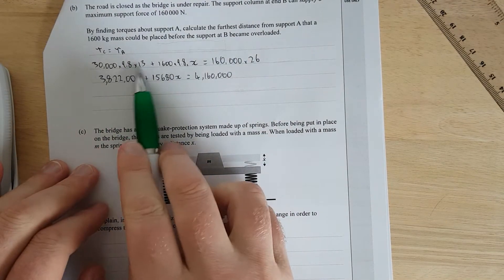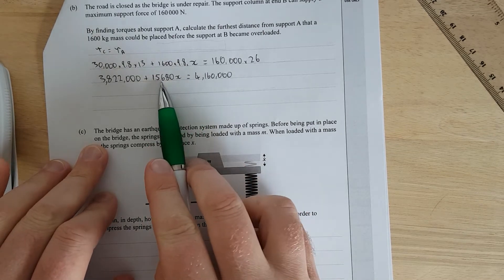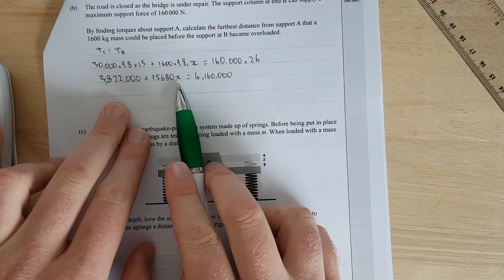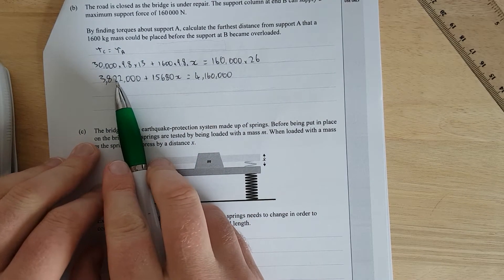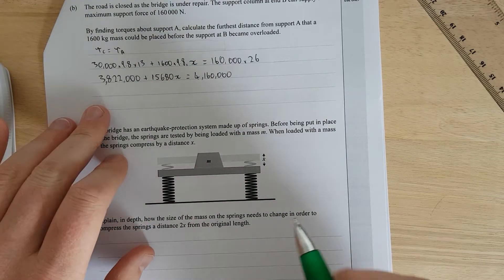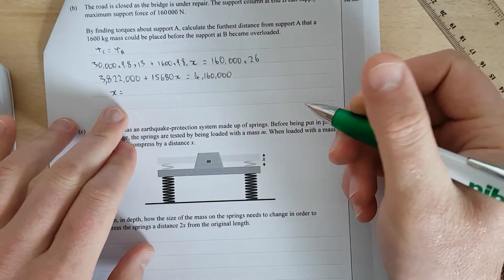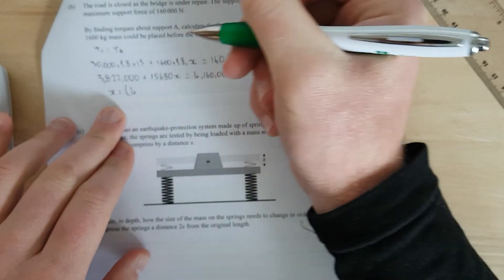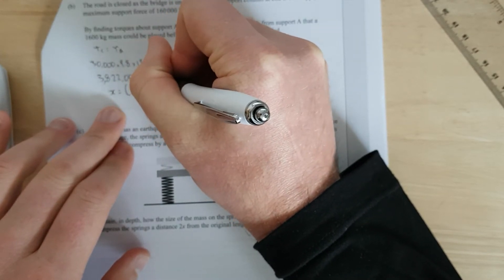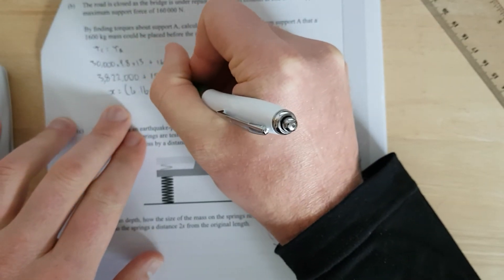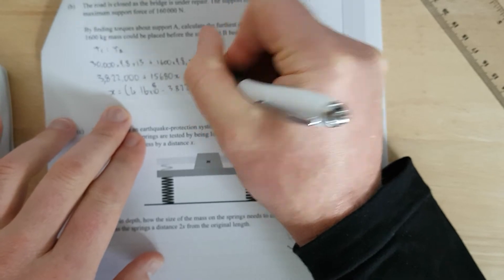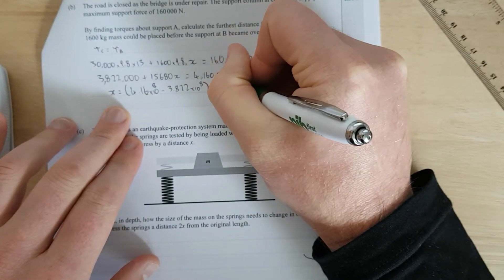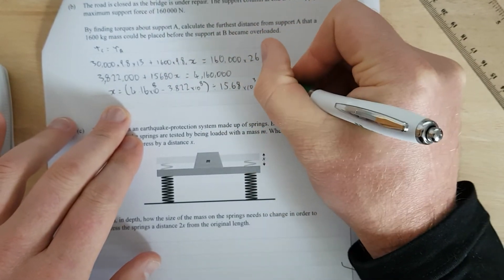I'll just do that off camera. So quickly on my calculator, all those times together equals 3.822 million. 1600 times 9.8 equals 15,680, and 160,000 times 26 is 4.16 million. So now what we need to do is minus both sides by 3.822 million, and then we'll divide that by 15,680. So we're going to have X is equal to 4.16 times 10 to the 6 minus 3.822 times 10 to the 6, divided by 15.68 times 10 to the 3.